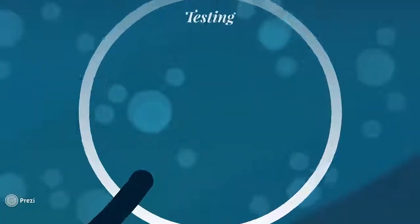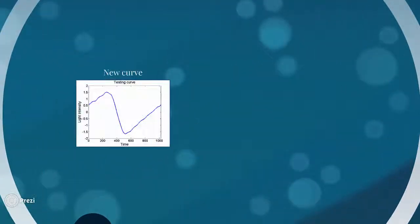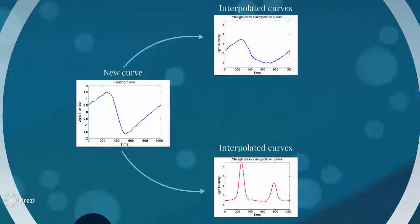In testing, a curve is moved closer to each set of interpolated curves. The movement, or interpolation, that produces the least error determines a classification.